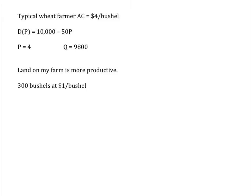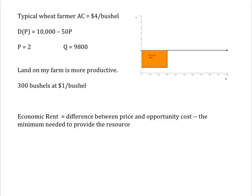Consider this example. Suppose typical wheat farmers in my region can produce wheat for $4 a bushel in the long run, operating with constant returns to scale, at least up to the point where they have filled all their fields with wheat. They sell in a market with this demand. But land on my farm is more productive — I can produce 300 bushels and only need $1 a bushel to cover my out-of-pocket expenses. That means I earn a surplus value of $3 on each bushel for 300 bushels, for a total of $900. That surplus can't be eroded by entry into the market because anyone entering would have unit costs of $4. That difference between what I can get for my wheat and the minimum amount I need to get to be willing to provide it is economic rent.